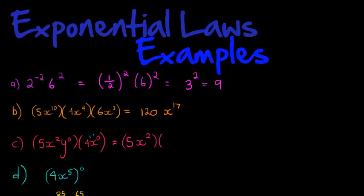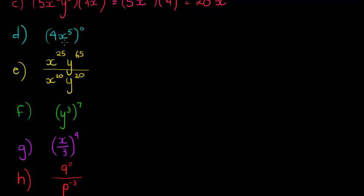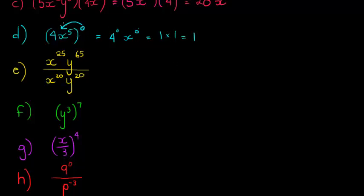Multiplying what remains: coefficients give 20 and the only base and exponent is x squared. For the next example, we have (4x^5) to the power of 0. You can distribute the 0 to every factor: 4 to the power of 0 times x to the power of 5×0, which is also 0, giving 1 times 1 equals 1. Or from the beginning, anything to the power of 0 equals 1, as long as x is not equal to 0 — if x equals 0 it's undefined.